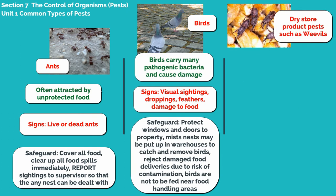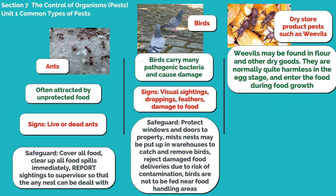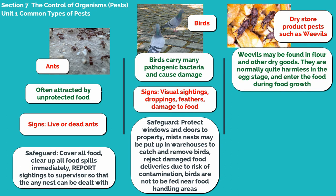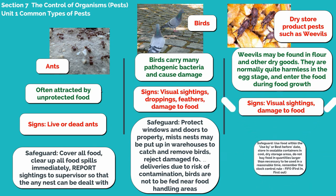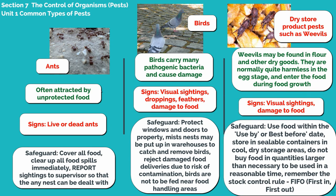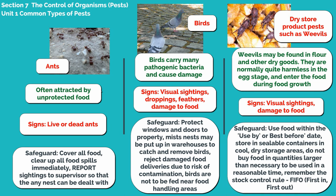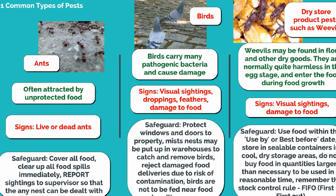Dry store product pests such as weevils may be found in flour and other dry goods. They are normally quite harmless in the egg stage and enter the food during food growth. Signs of them are visual sightings and damage to food. In order to safeguard, use food within the use by or best before date, store in sealable containers in cool, dry storage areas, and do not buy food in quantities larger than necessary. Remember the stock control rule: FIFO — First In, First Out.